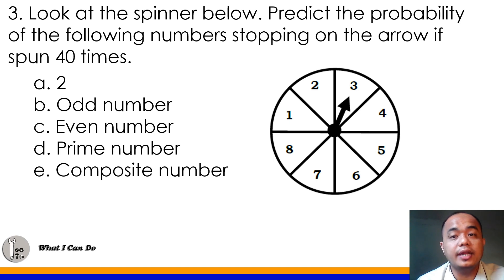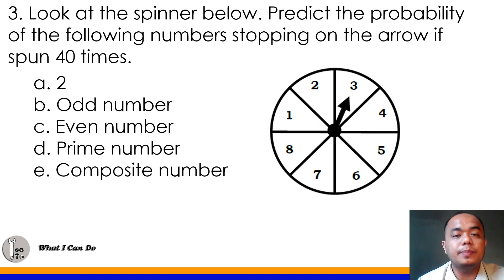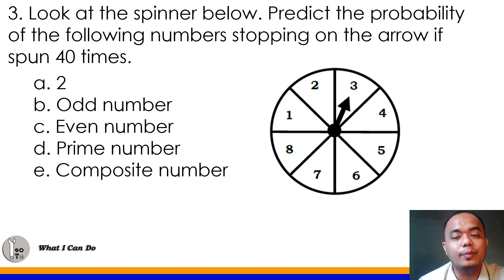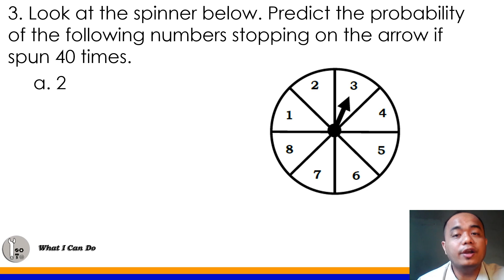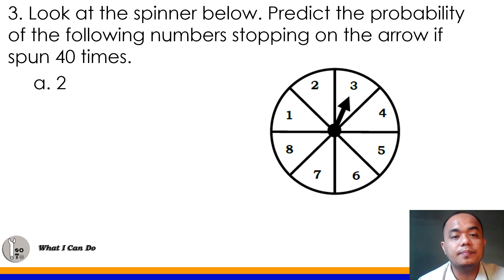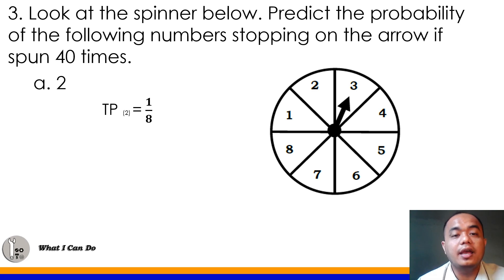Number 3: Look at the spinner numbered 1 to 8. Predict the probability of the following stopping on the arrow if spun 40 times: A) number 2, B) odd number, C) even number, D) prime number, E) composite number. For letter A, the probability of stopping on 2 — there is only 1 number 2 out of 8, so the theoretical probability is 1/8. We use theoretical probability since there is no actual experiment result.